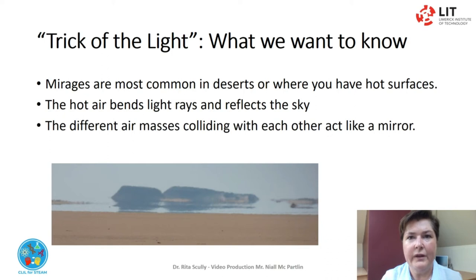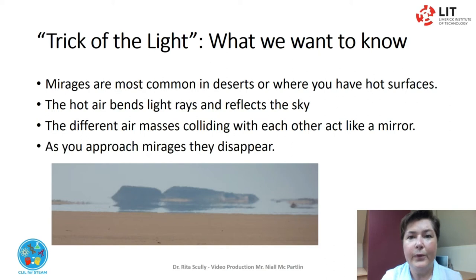When seen from a distance, the different air masses colliding with each other act like a mirror. The desert ahead seems to have become a lake, but it is actually a reflection of the sky above. A similar effect is often seen on hot road surfaces in summer, where it looks like there is water on the road. As you approach mirages, they disappear. The next time you are out driving on a sunny day, look ahead on the road — see if it looks like there is water on the surface. That is a mirage.